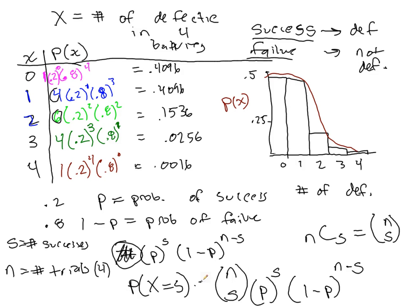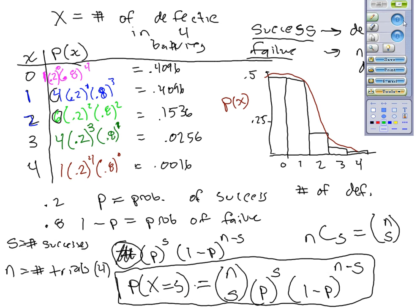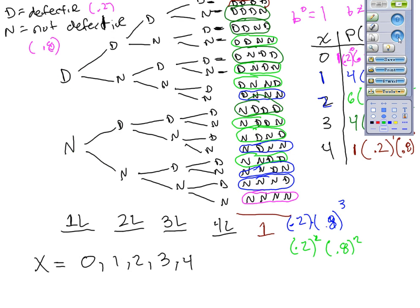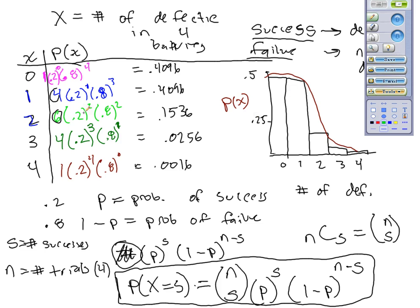The probability that X equals s is given by, in other words, the probability that we get s successes is given by this nice little compact formula, which initially looks complicated, but it does the trick for us. It saves us all that time from having to draw this long, long, painful-looking table. This does it all for us.